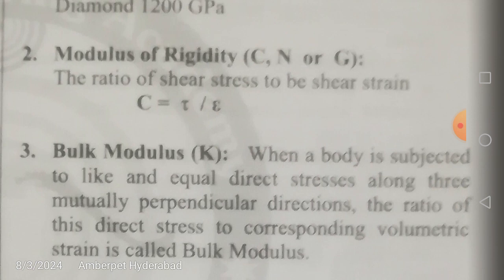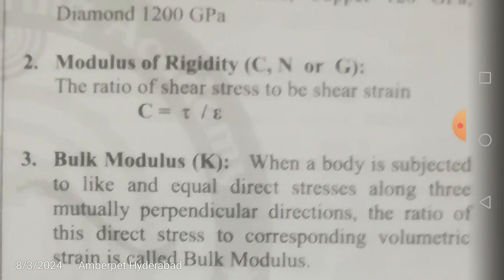Modulus of rigidity, denoted by C or G: it is the ratio of shear stress to shear strain. Shear stress is denoted by tau and shear strain by epsilon. Shear stress is responsible for change in the shape, while longitudinal or normal stress is responsible for change in the size of a component.